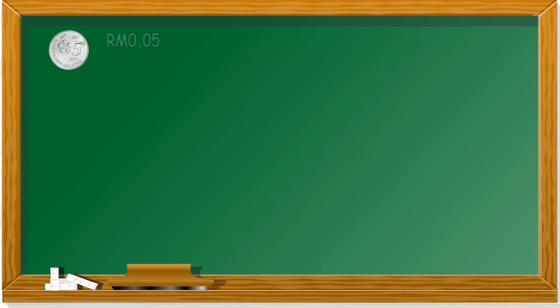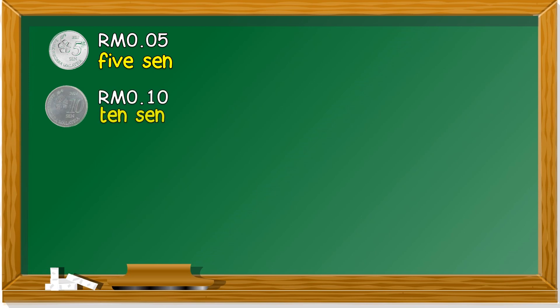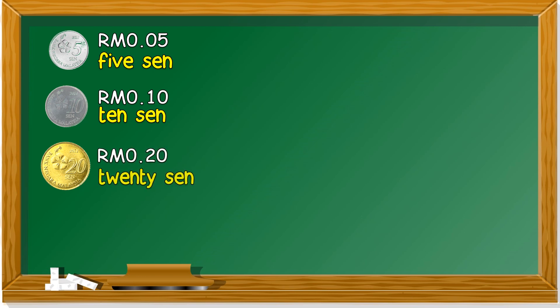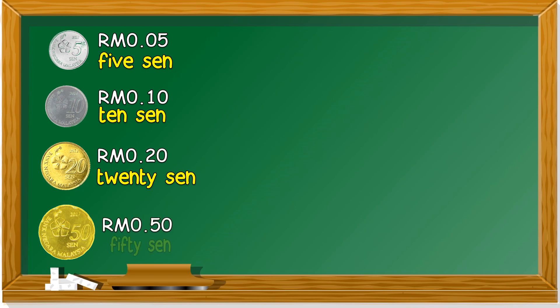Before we proceed, let's revise the money we have learned from the previous lesson. Remember all the coins and notes? This is 5 cent. This is 10 cent. This one, 20 cent. How about this? 50 cent.